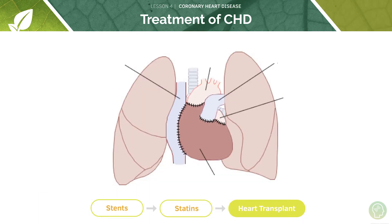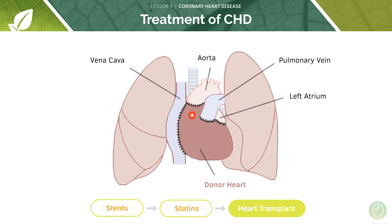Now let's look at our third treatment option: the heart transplant. To recap the anatomy, the vena cava returns deoxygenated blood from the rest of the body to the right atrium. The aorta comes out of the left ventricle and pumps blood to the rest of the body. The pulmonary vein brings oxygenated blood back from the lungs into the left atrium. Remember: this is the right side and this is the left side of the heart, because we're looking at the patient face on.